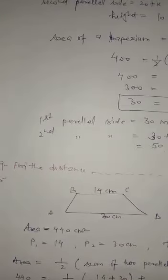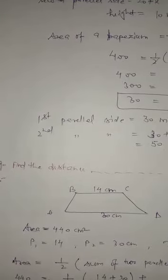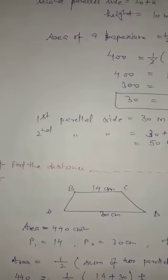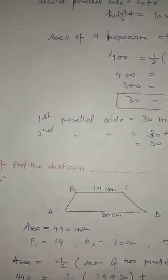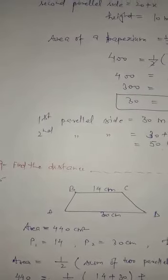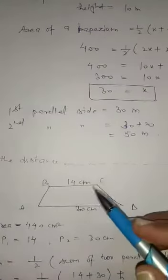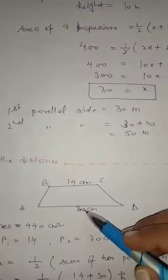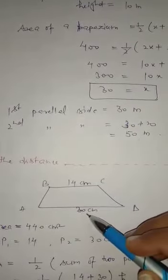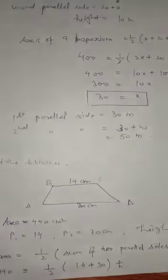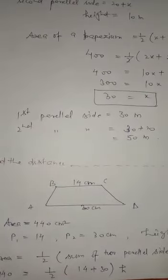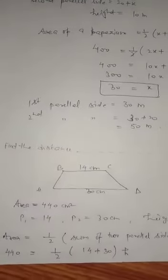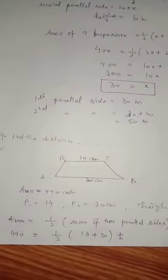Question 9: Find the distance between two parallel sides of a trapezium whose area is 440 cm square and the parallel sides measure 30 cm and 14 cm. Use the same formula to find the height.